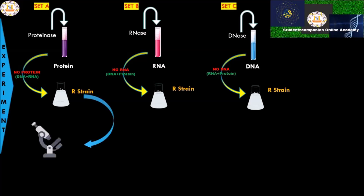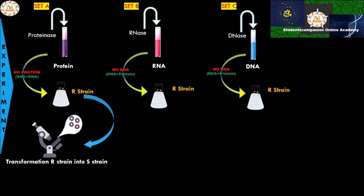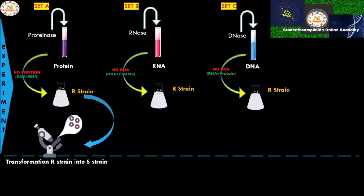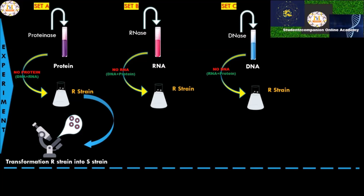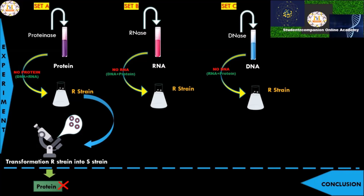In the first set, it was observed that there were live S strain present in the cultured medium. This concludes that the R strain was transformed into the S strain. The conclusion from the first set is that protein is definitely not the transforming material, because in its absence transformation still happened.